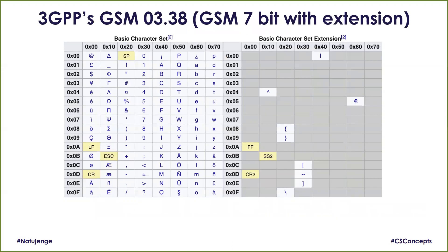At the same time, other standard bodies like 3GPP, which is a GSM or mobile network standard, came up with their own GSM 7-bit, also known as GSM 0338. This uses 7-bit with the possibility of extending to 8-bit to cover more characters. It caters for European characters, Greek letters, English letters, numbers, and the standard keyboard characters.